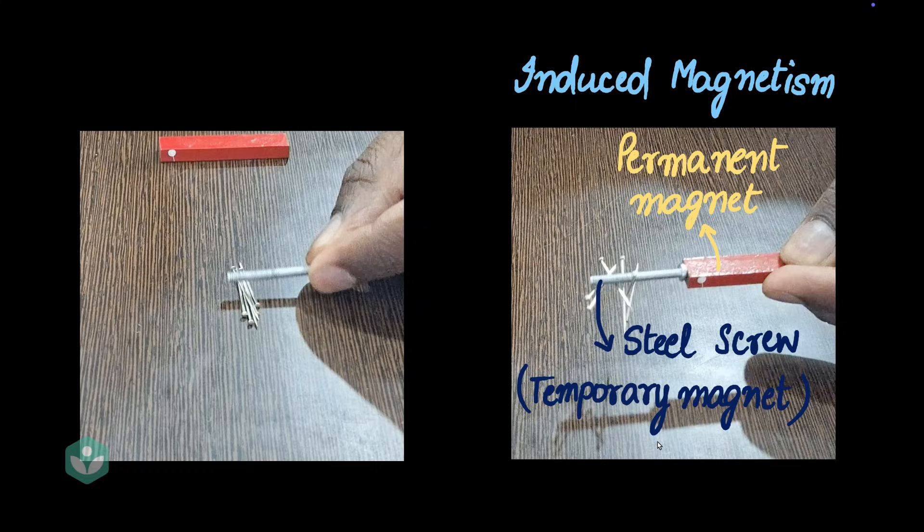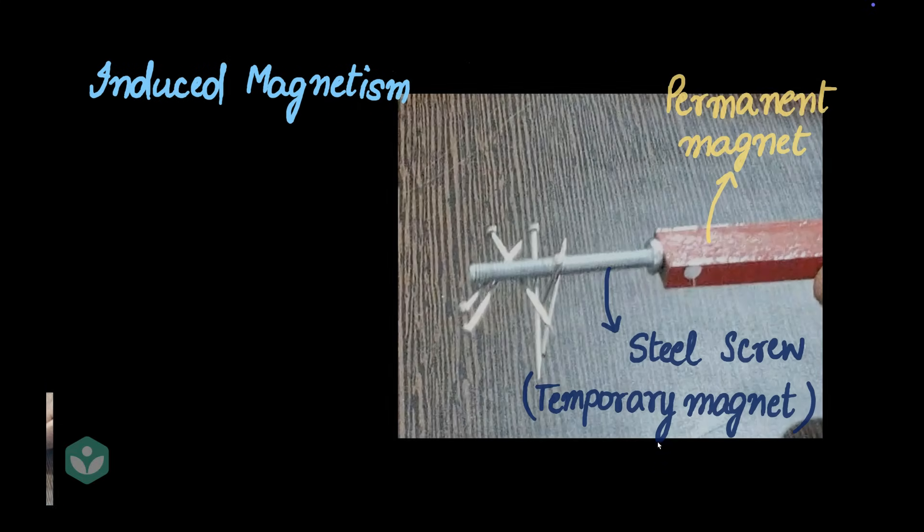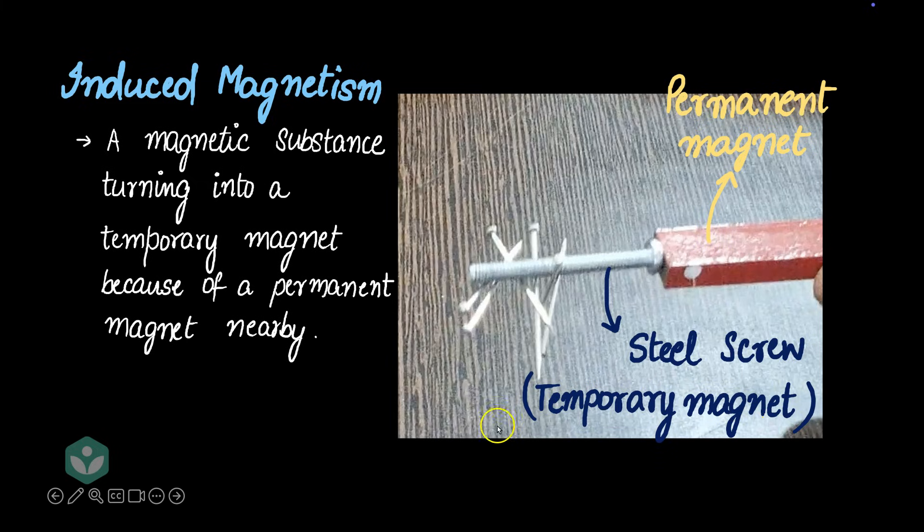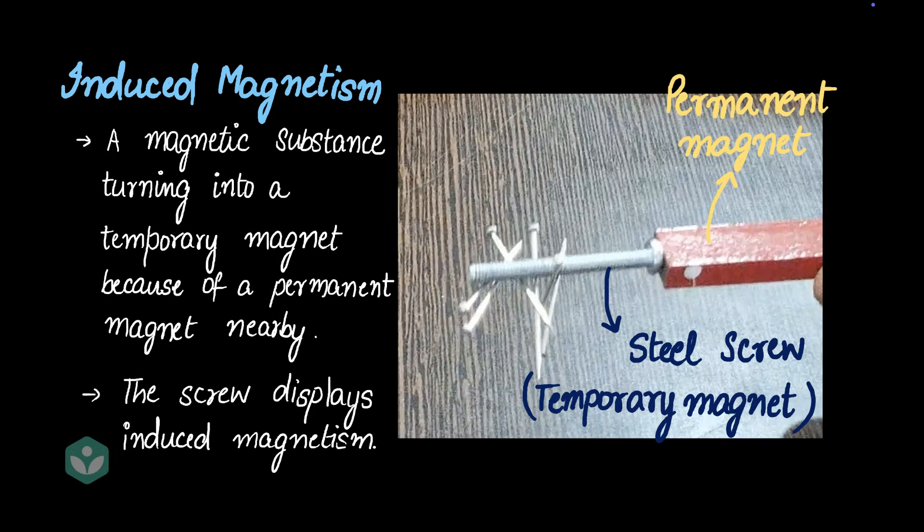Let me just formally write down what induced magnetism is before we close this video. So, when a magnetic substance turns into a temporary magnet, here the steel screw turned into a temporary magnet because of a permanent magnet that is nearby. So it's pretty clear in this case the steel screw displays induced magnetism. That's it for this video. Thanks for watching.